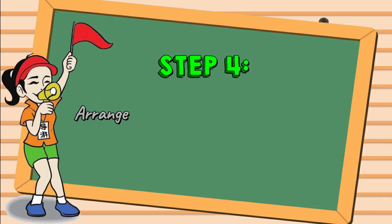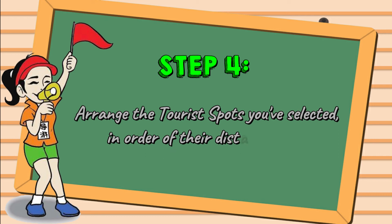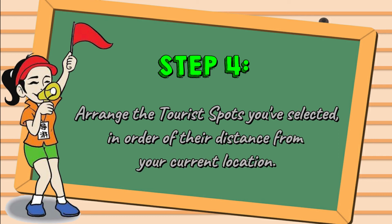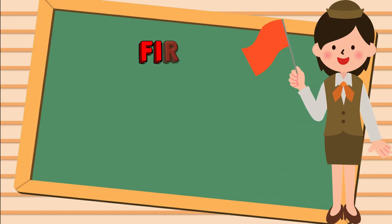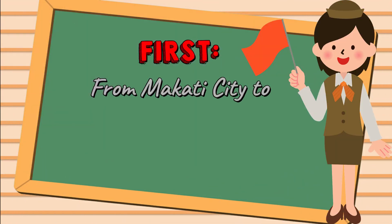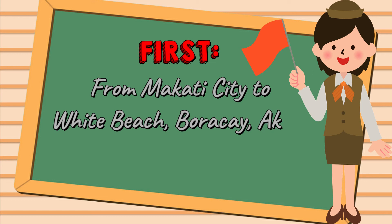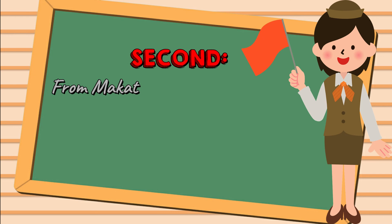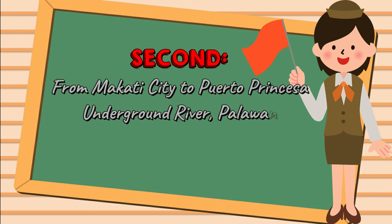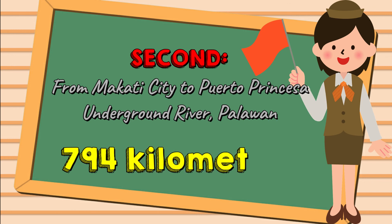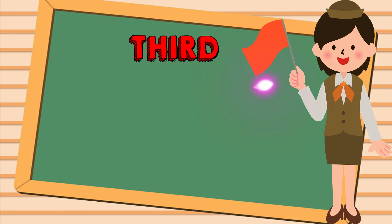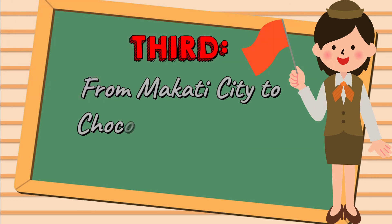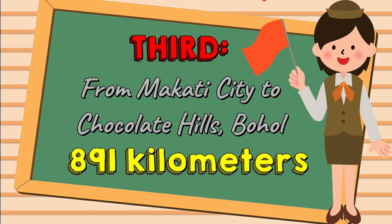Step 4: Arrange the tourist spots you've selected in order of their distance from your current location. For example — First: From Makati City to White Beach, Boracay, Aklan is 435 kilometers. Second: From Makati City to Puerto Princesa Underground River, Palawan is 794 kilometers. Third: From Makati City to Chocolate Hills, Bohol is 891 kilometers.